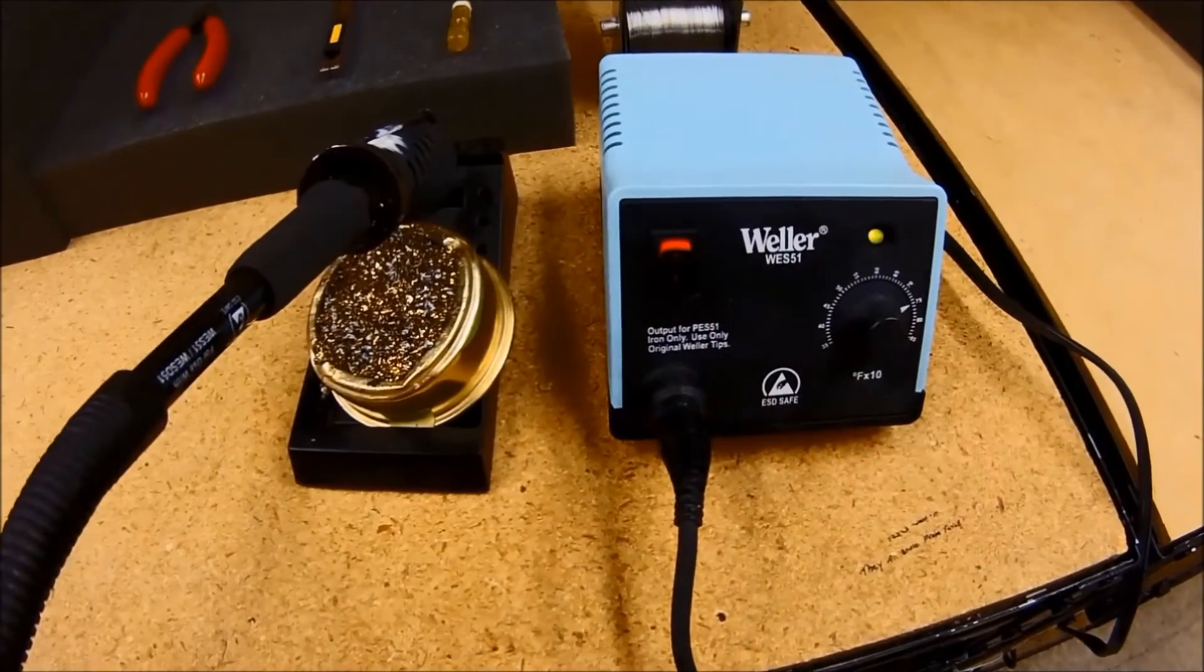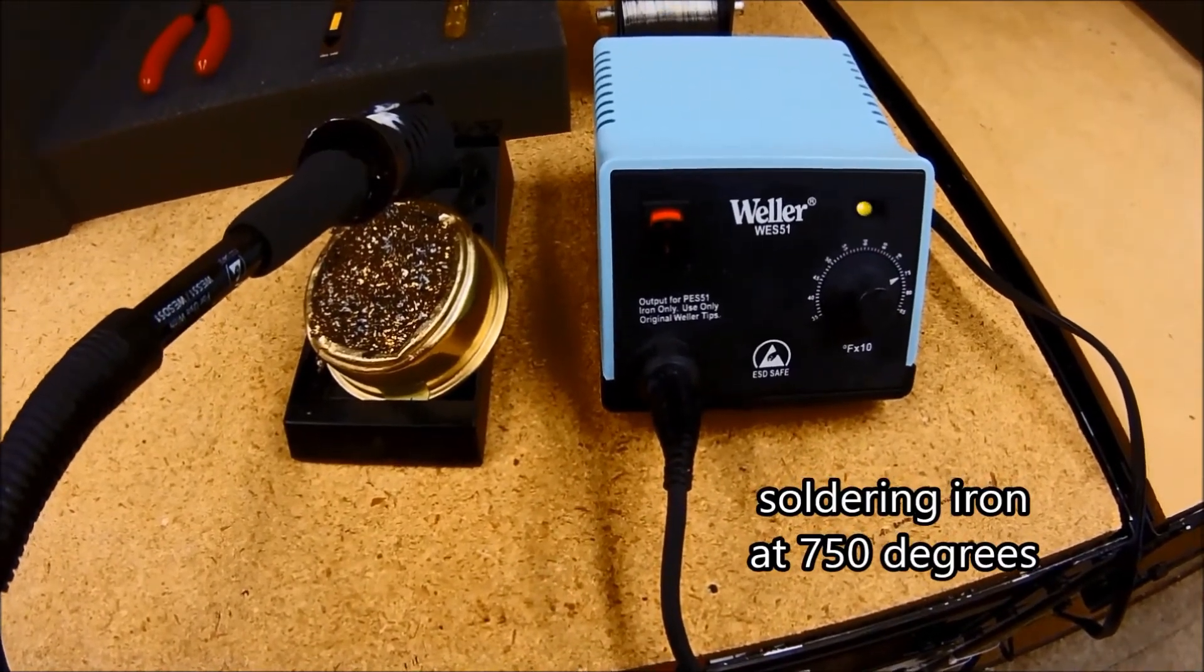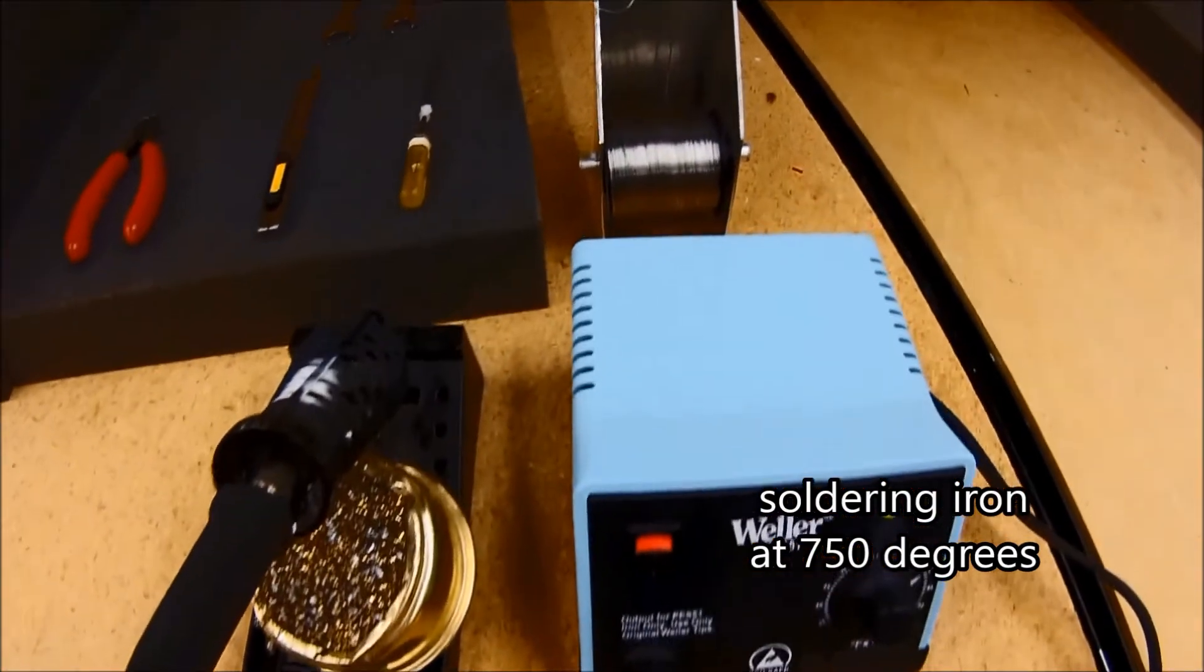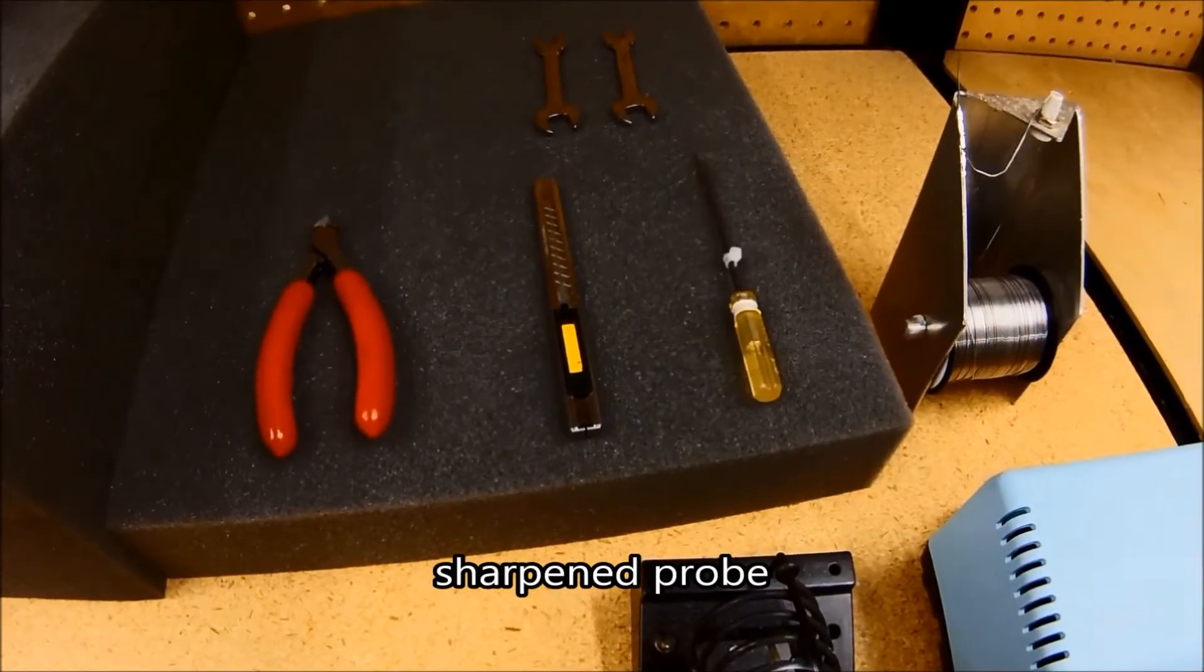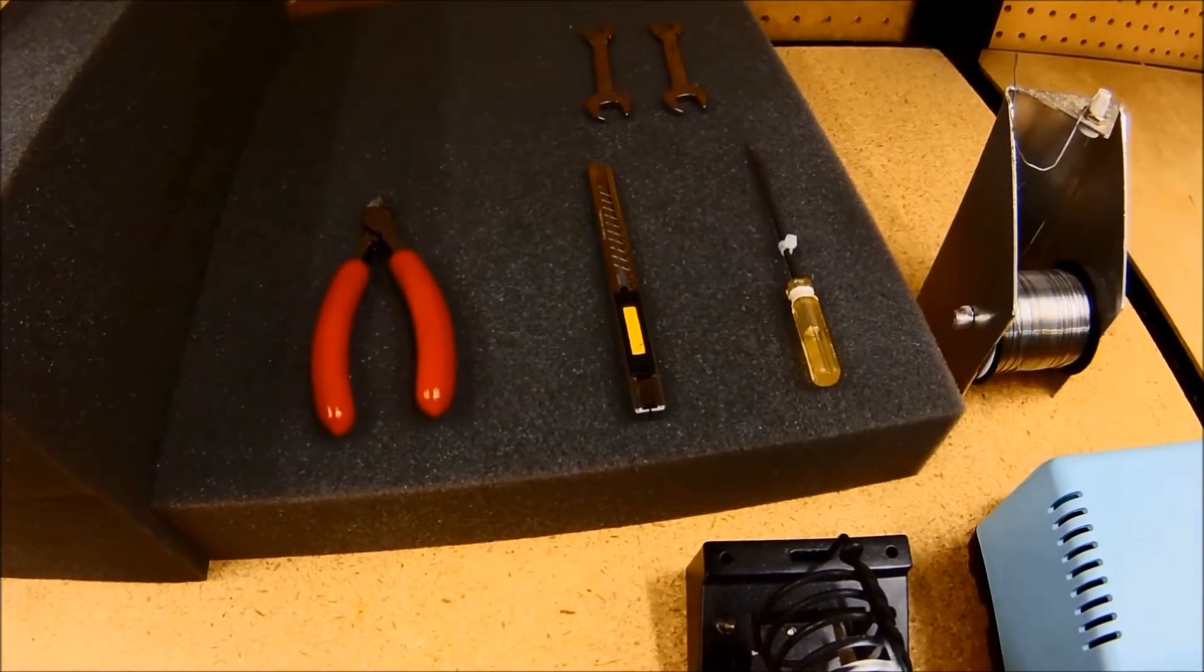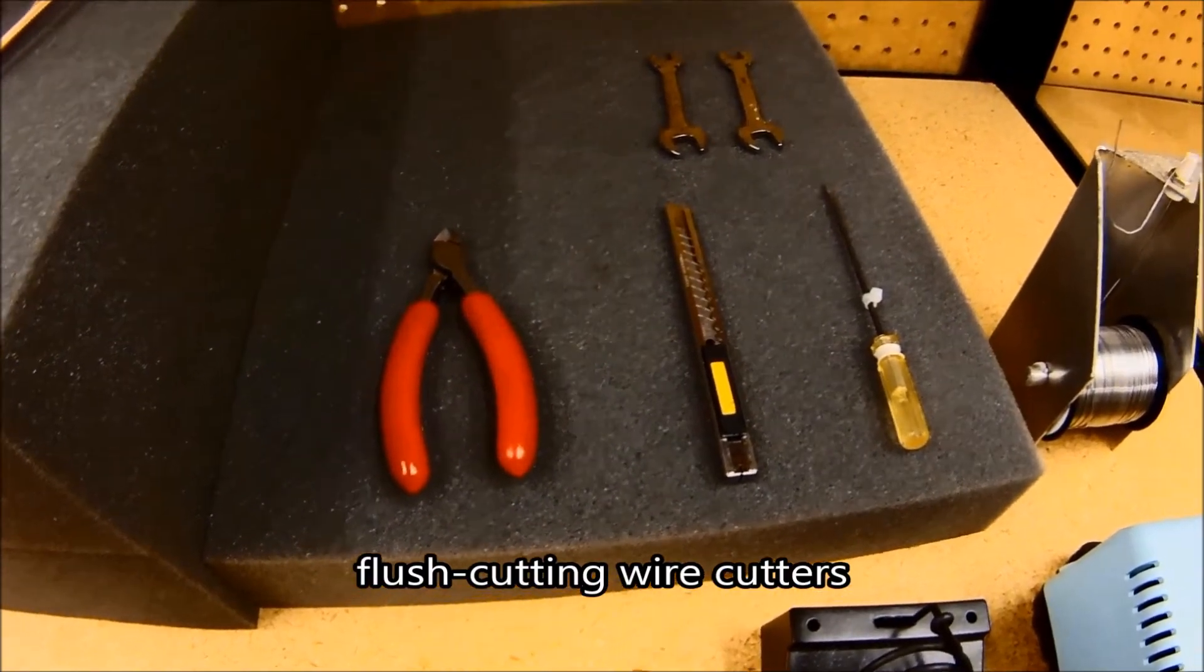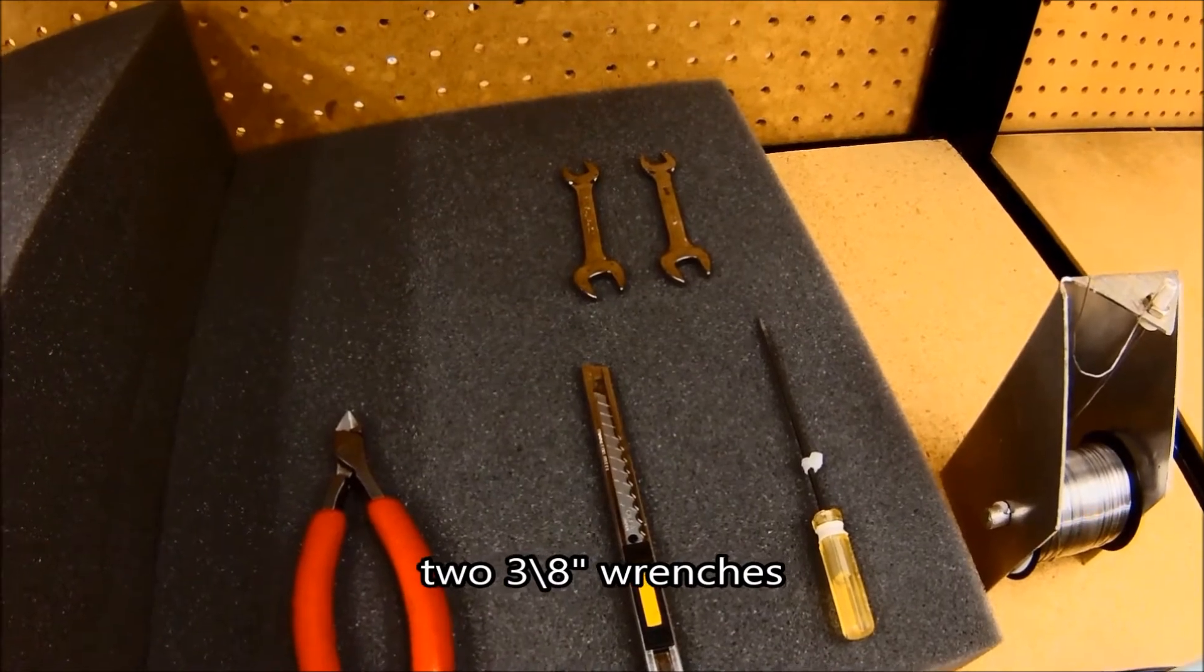Here's a look at some of the tools I'm going to use. I have a pencil tip soldering iron set at 750 degrees with a tip cleaner. I have some 25 thousandths rosin core solder, a sharpened probe, a sharp razor knife, a pair of flush cutting wire cutters, and in this case I have two 3 eighths inch open end wrenches.